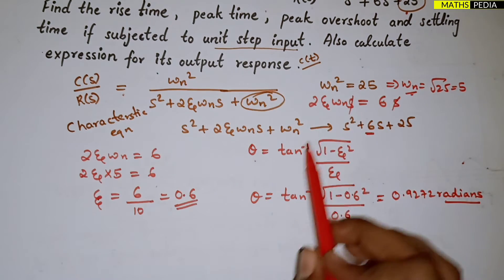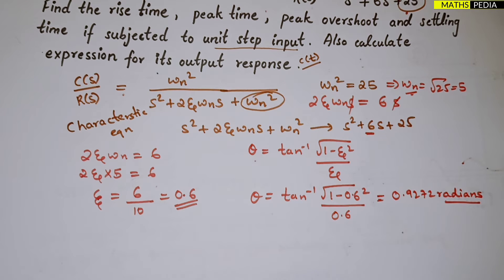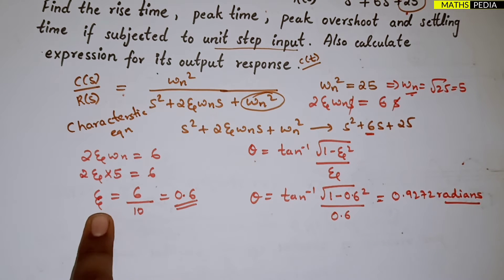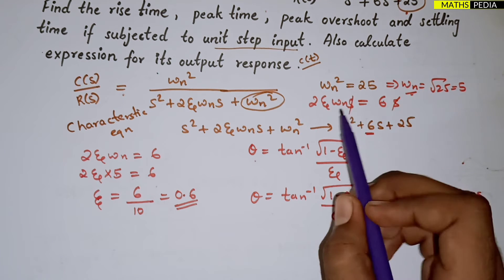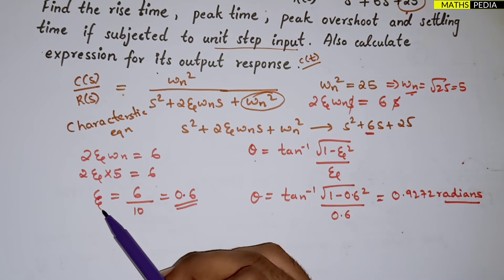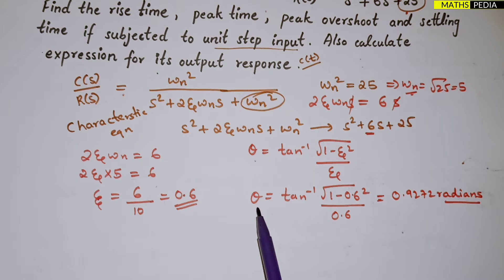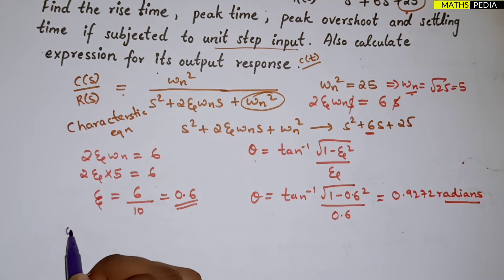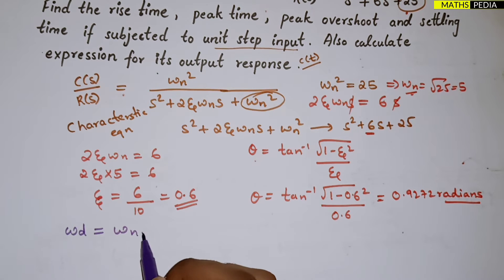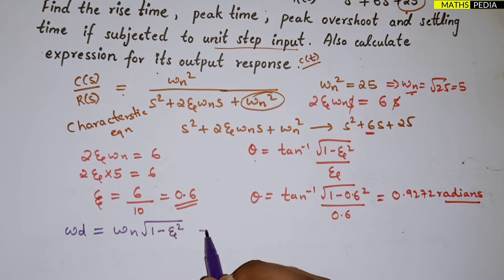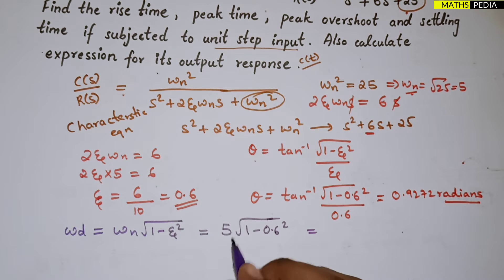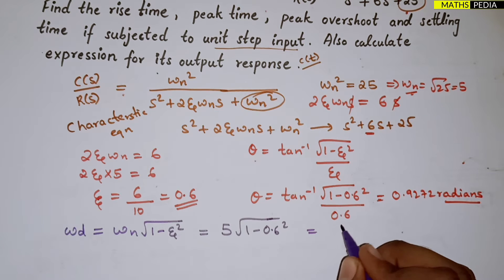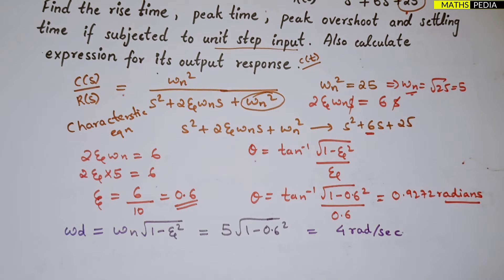We are finding θ, ζ, and ωn because all the transient specification formulas — rise time, peak time, etc. — contain these values. Next, we calculate ωd. ωd = ωn × √(1 - ζ²) = 5 × √(1 - 0.6²). When you simplify this you get ωd = 4 radians per second.